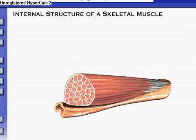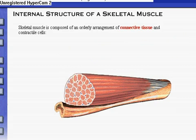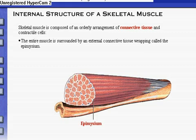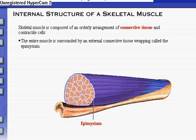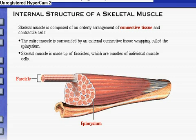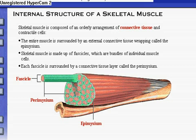Let's look at the internal structure of a skeletal muscle. A typical skeletal muscle is composed of an orderly arrangement of connective tissue and contractile cells. The entire muscle is surrounded by an external connective tissue wrapping called the epimysium. The skeletal muscle itself is made up of fascicles, which are bundles of individual muscle cells. Each fascicle is surrounded by a connective tissue layer called the perimysium.